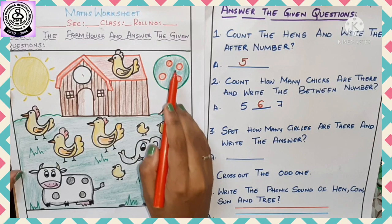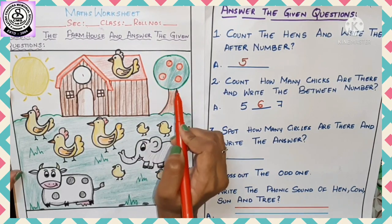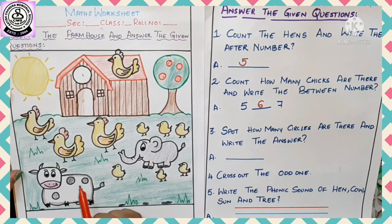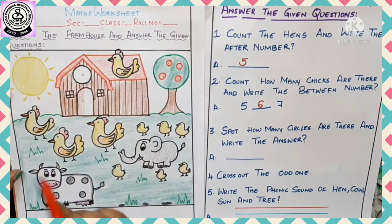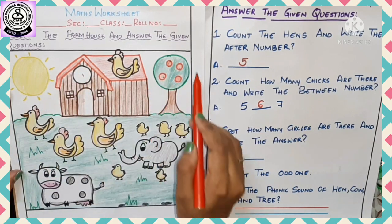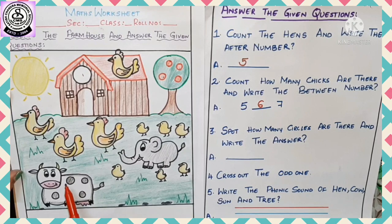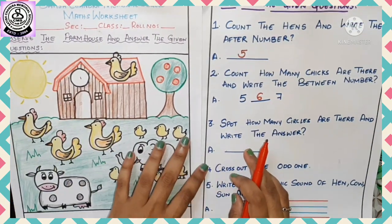Wow, very good! Now let's count: one, two, three, four, five, six — and this big one — seven, eight, nine, ten, and one more here — eleven! So we have eleven circles. Let's count once again: one, two, three, four, five, six, seven, eight, nine, ten, and eleven. So how many circles? Eleven — the answer is eleven.